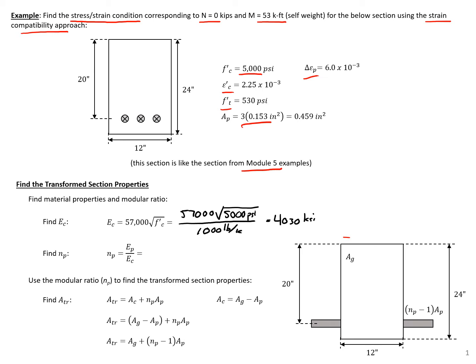Next we need to find our modular ratio. We do this by dividing the modulus for our prestressing — 28,500 KSI — by the modulus of our concrete, 4,030 KSI, which gives us a modular ratio of 7.1.